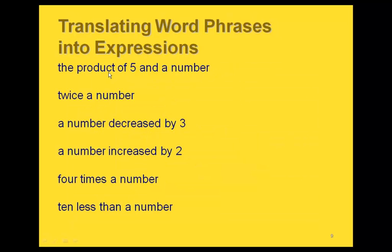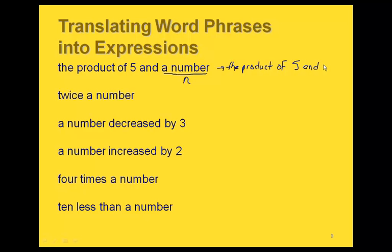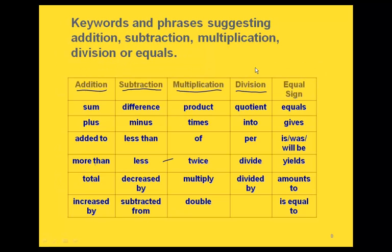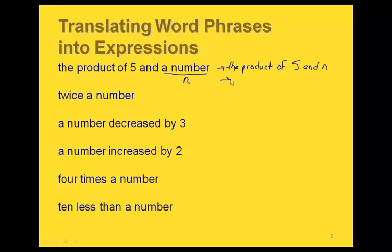In translation problems, we write an expression from a phrase. When a phrase says 'a number,' we use a variable — any variable we like. For example, 'the product of 5 and n': product translates to multiplication, so the expression is 5 times n, or simply 5n.